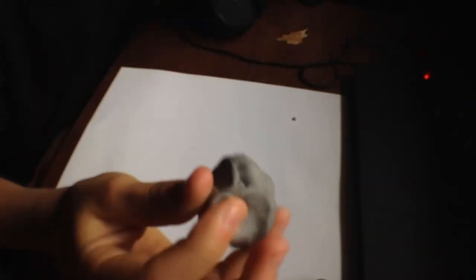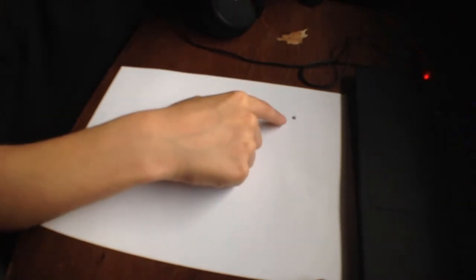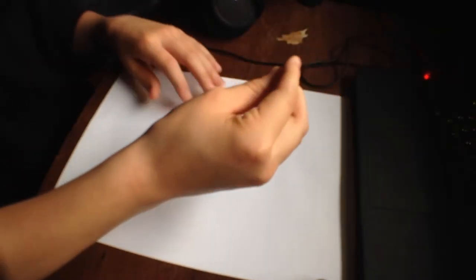And this is called kneading. Kneading is when you take a shape, you squish it, and it becomes a different shape. But in this case, what we're doing with this little tiny piece is we are kneading it to make it more softer and better in our hand, because it's really hard to squish whenever you have it for the first five seconds.